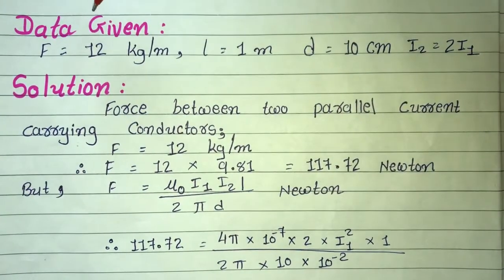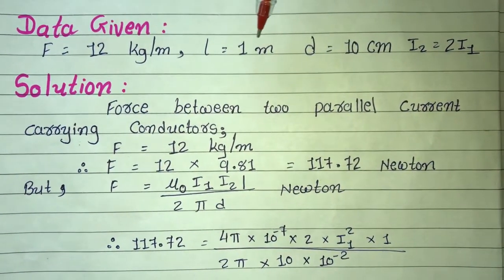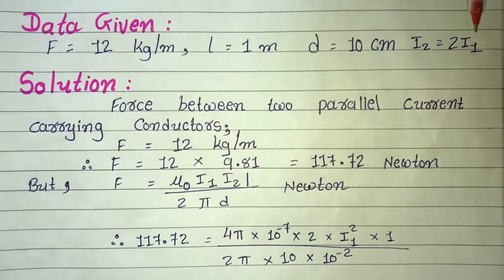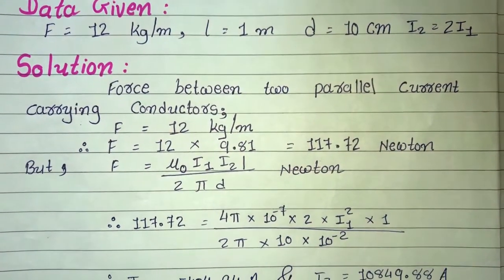So, F is equal to 12 kg per meter, L is equal to 1 meter, small d is equal to 10 cm, and I2 is equal to 2 I1. What we will do here? Twice.